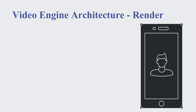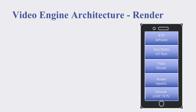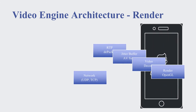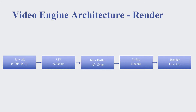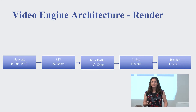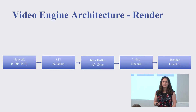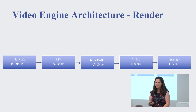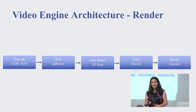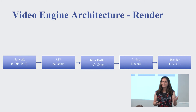On the receiver and renderer side — again, very typical to any RTC app — we receive packets from the network, do depacketization, then jitter buffer and audio-video sync. We do video decoding and rendering. Besides rendering, which is platform-dependent, all other components we try to share across all platforms.